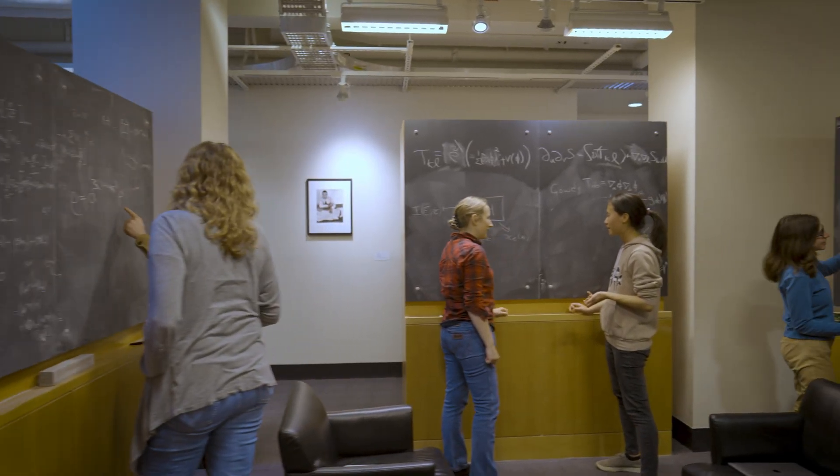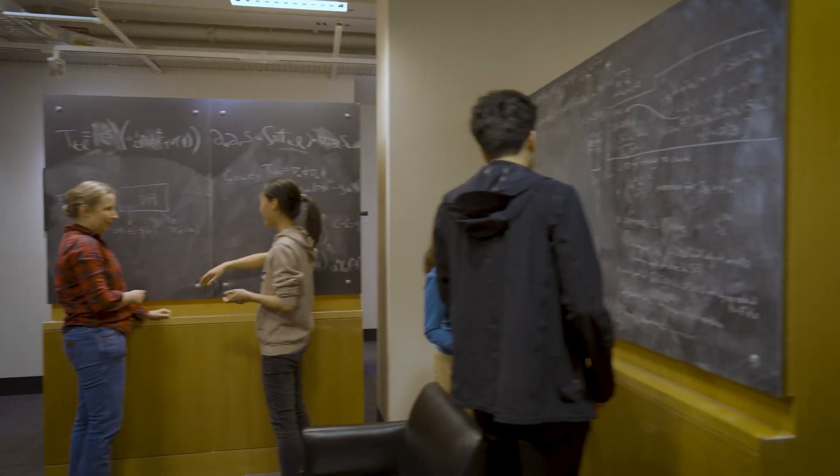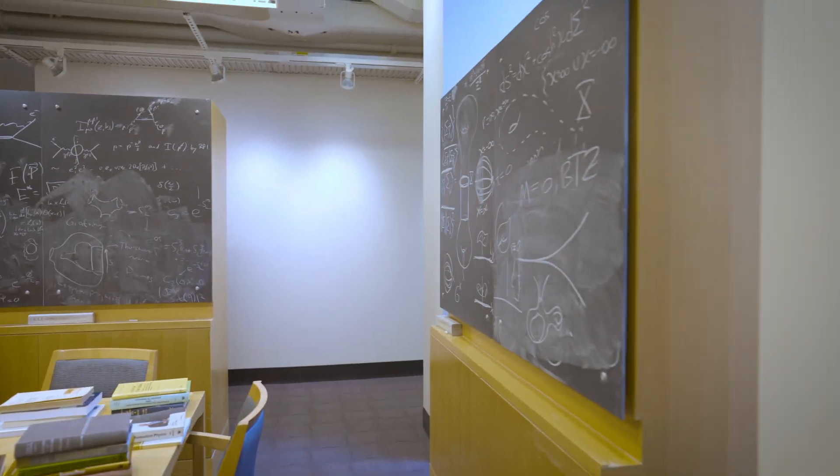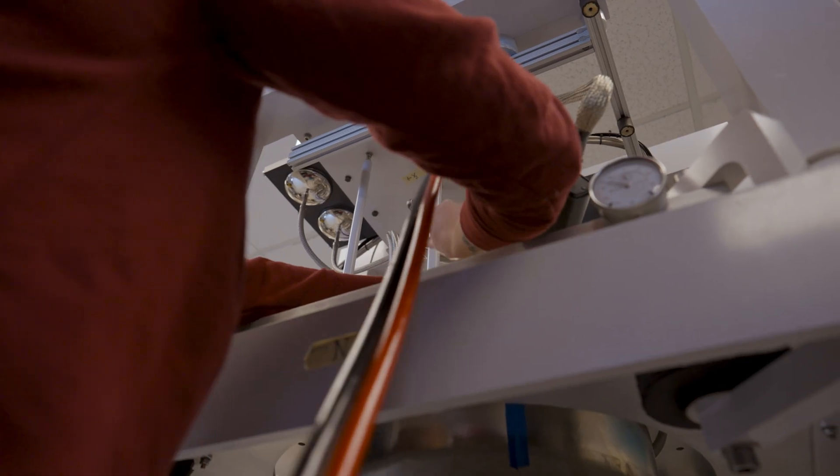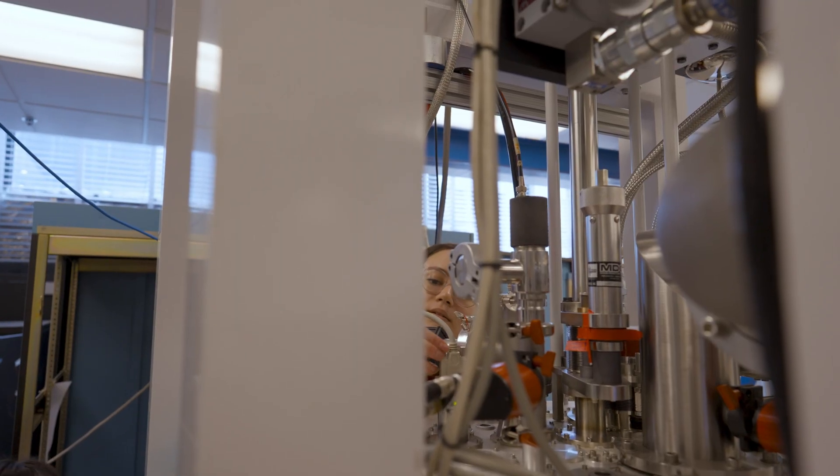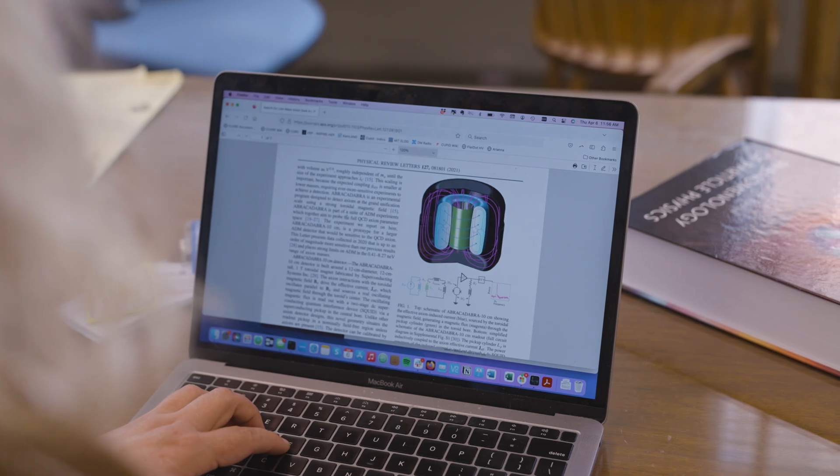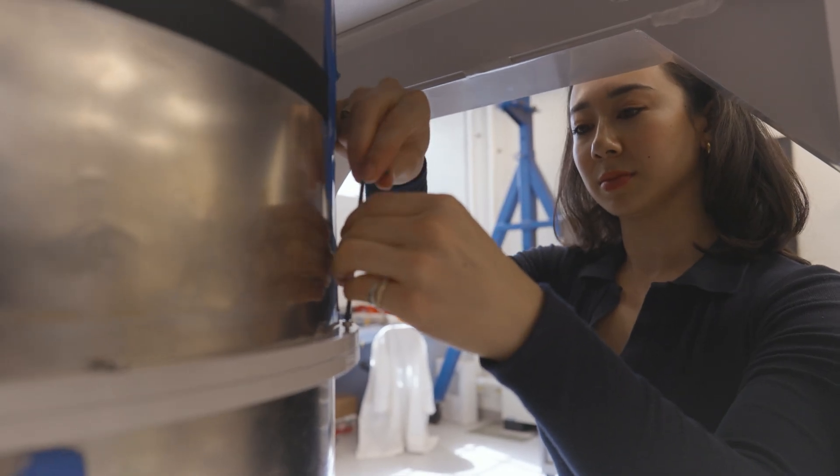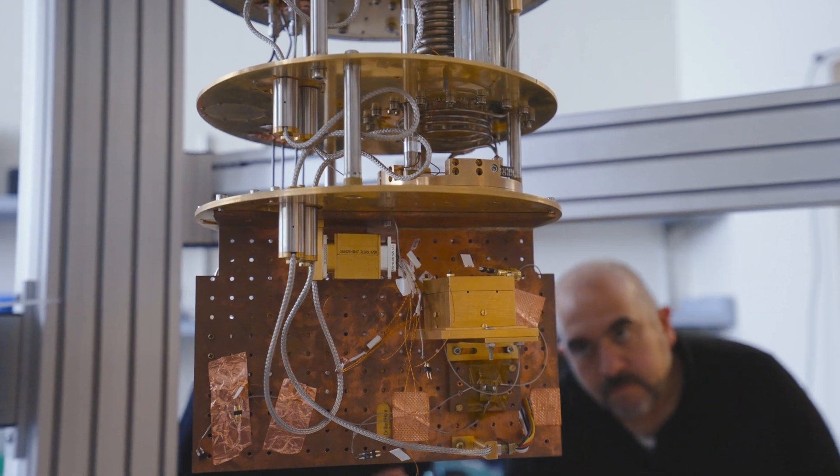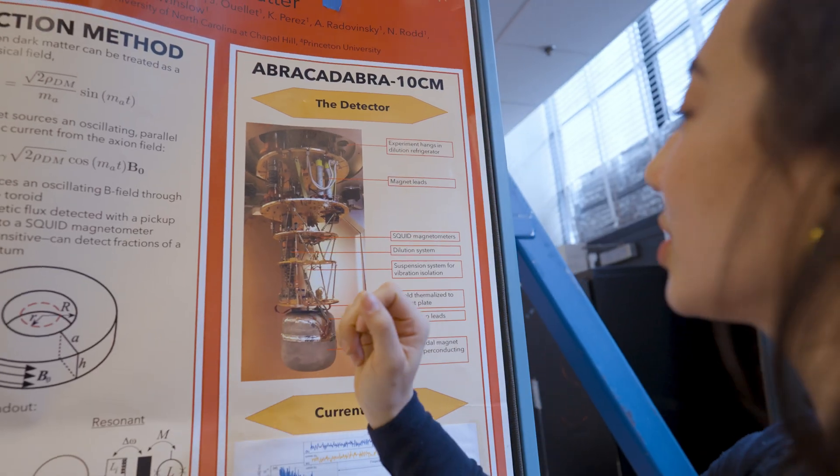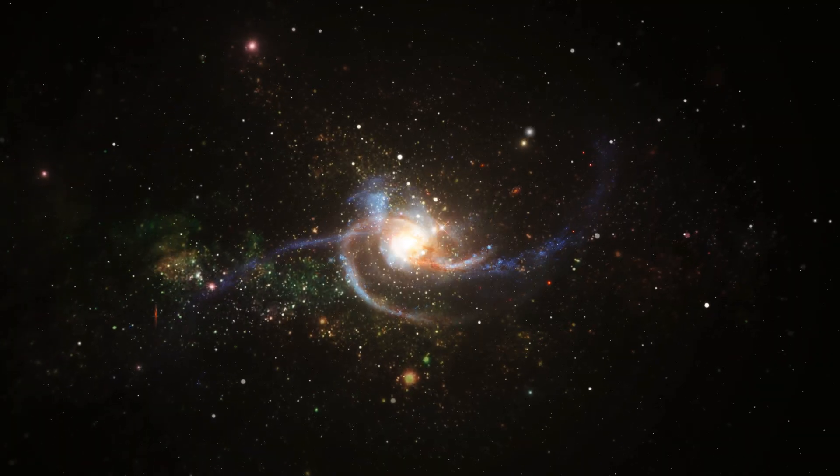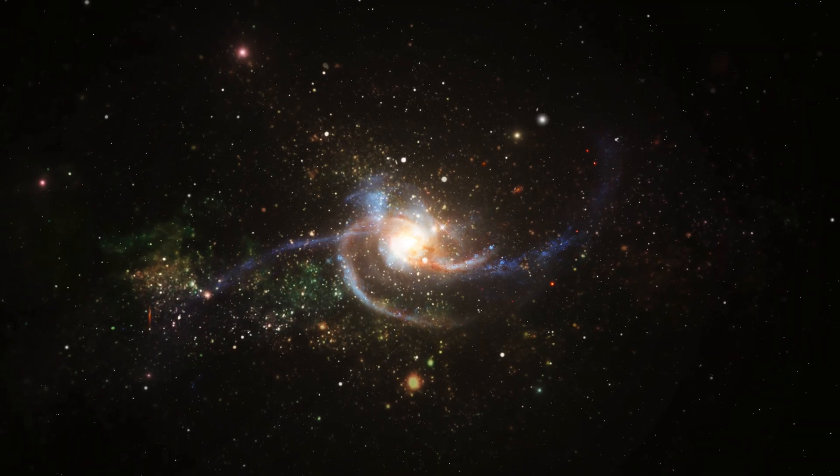So where we stand right now is that theorists have done an amazing job of giving us a suite of really well-motivated candidates for what this new dark matter could be. The experimentalists have risen to the challenge and have come up with a lot of experimental ideas for how we are going to search for that new form of matter within the next decade. So what I think is really exciting is that within the next decade or two we will have the experimental capability to look for what are currently the best motivated candidates for what dark matter could be.